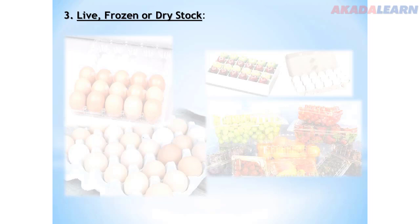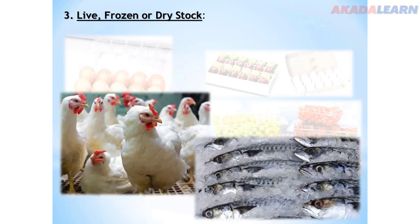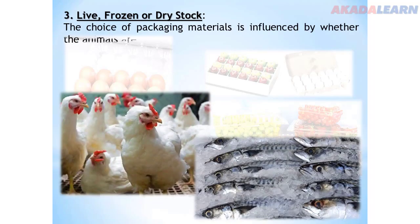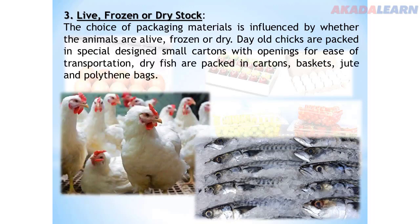Number three: is the produce live, frozen or dry stock? The choice of packaging materials is influenced by whether the animals are alive, frozen or dry. For example, old chicks are packed in specially designed small cartons with openings for ease of transportation. Dry fish are packed in cartons, baskets, jute and polythene bags, while frozen fish are packed in a carton sealed up with nylon.